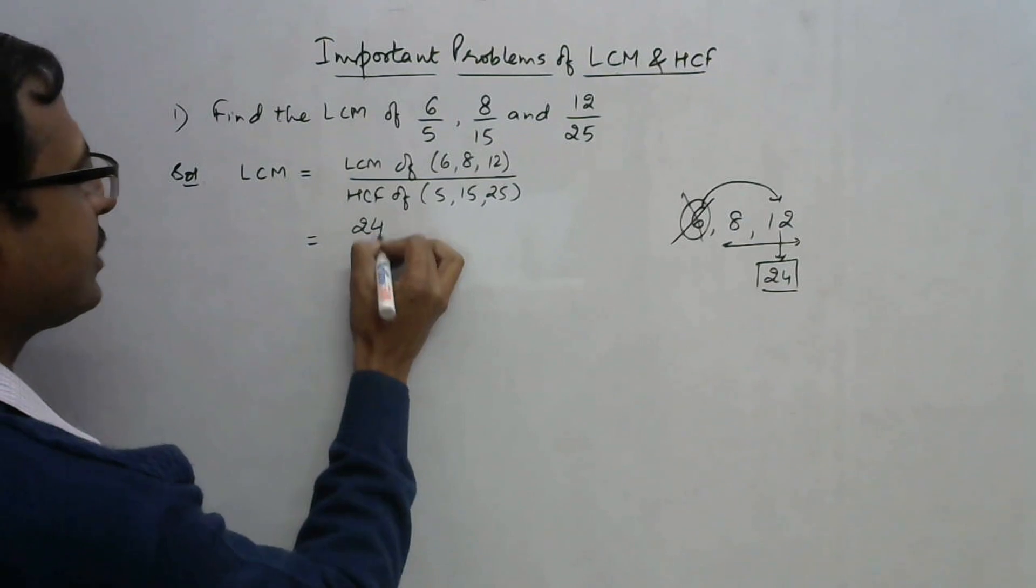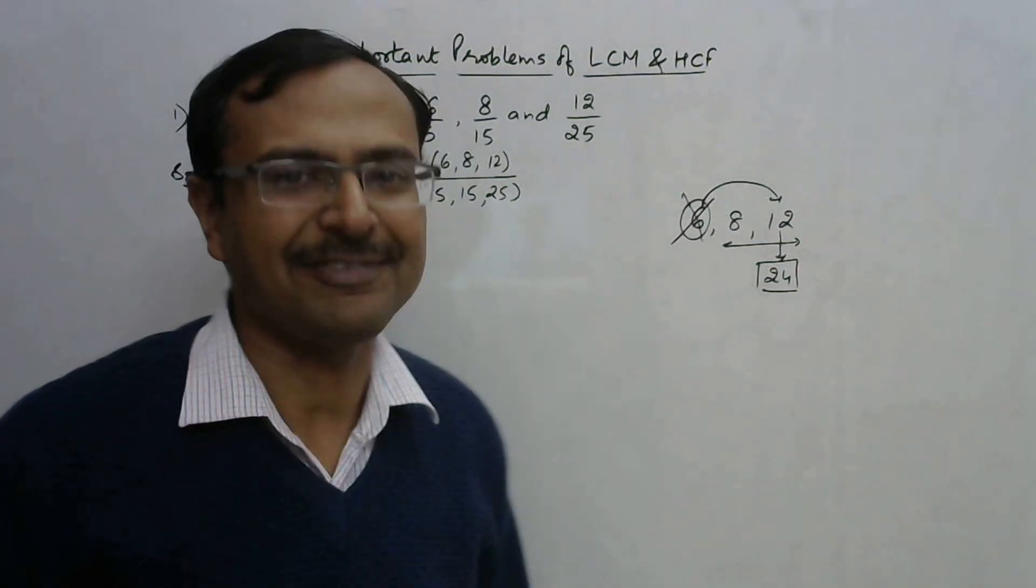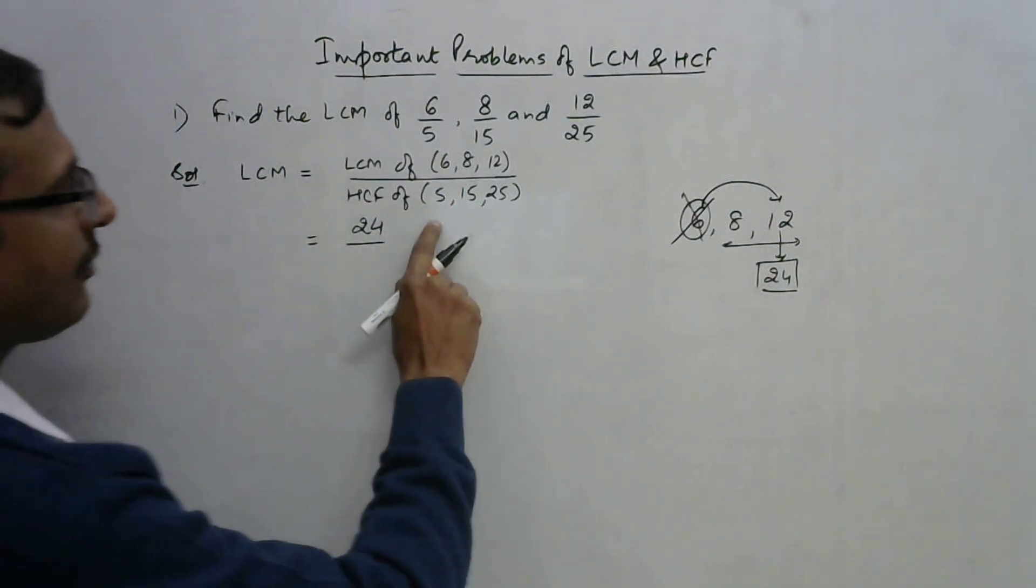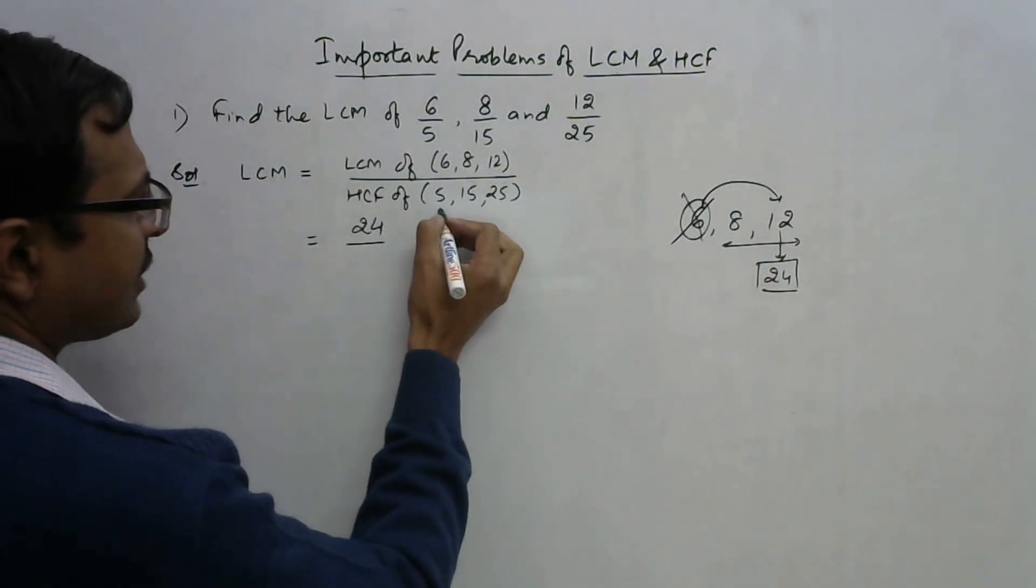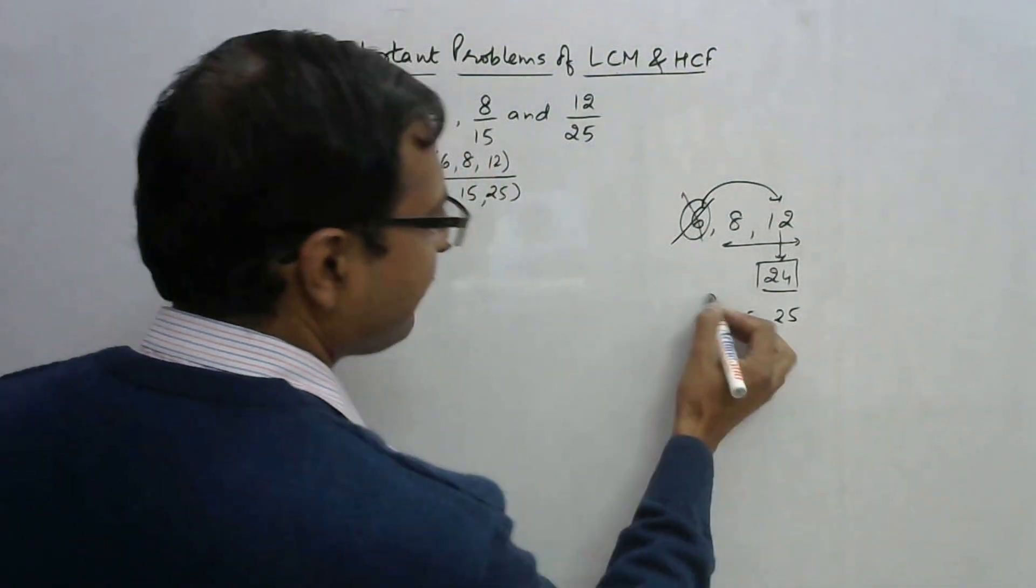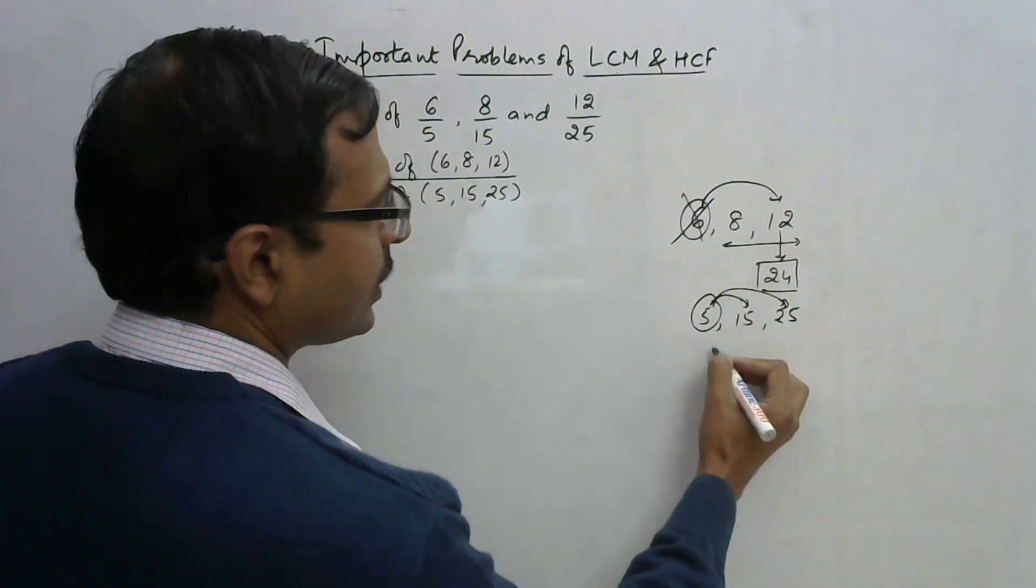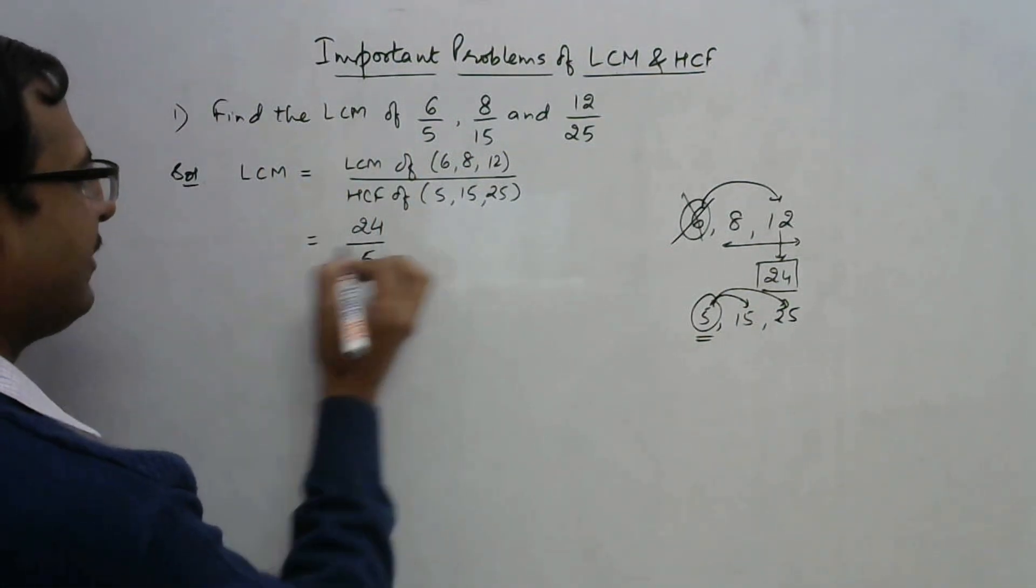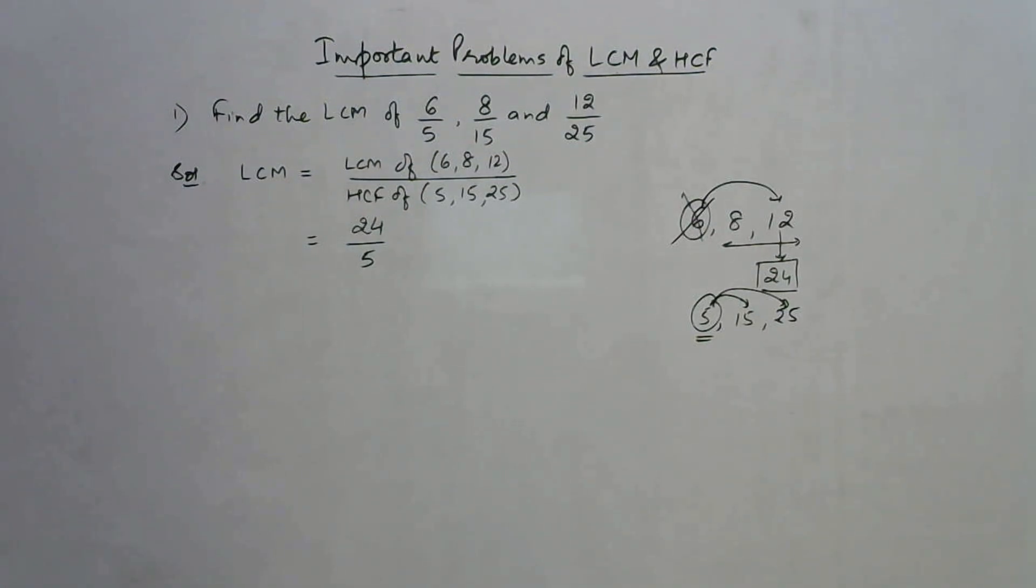The numerator is 24. What about HCF of 5, 15, and 25? Very easy. The smallest number is 5, and 5 divides 15 and 25 both, so the HCF is 5. Therefore, the LCM of 6 upon 5, 8 upon 15, and 12 upon 25 is 24 upon 5. Now this is the first question.